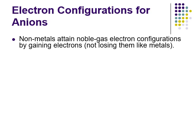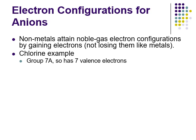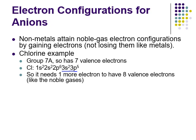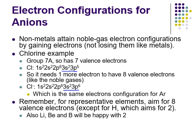Anions are handled pretty much the same way. Non-metals form anions, meaning they gain electrons - to be like the noble gases. Take chlorine: it's in group 7A, a halogen, with seven valence electrons. Its electron configuration shows seven valence electrons in the 3s and 3p. To be like a noble gas it can either gain one or lose seven - it's going to gain one. So chlorine gains one electron, ending with 3s2, 3p6 - just like argon, the same exact electron configuration. You're generally aiming for eight valence electrons, except for the lightest elements - hydrogen, lithium, beryllium, and boron - which lose electrons to be like helium.